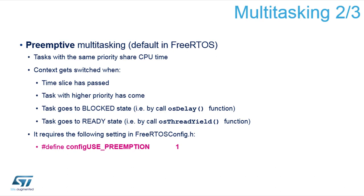Preemption is enabled by setting the use preemption macro to one. This way the behavior of the operating system becomes more user-friendly because all tasks with the same priority get scheduled after a time slice, giving the feeling that all of them run faster. Now, why might you not want to use preemptive multitasking?